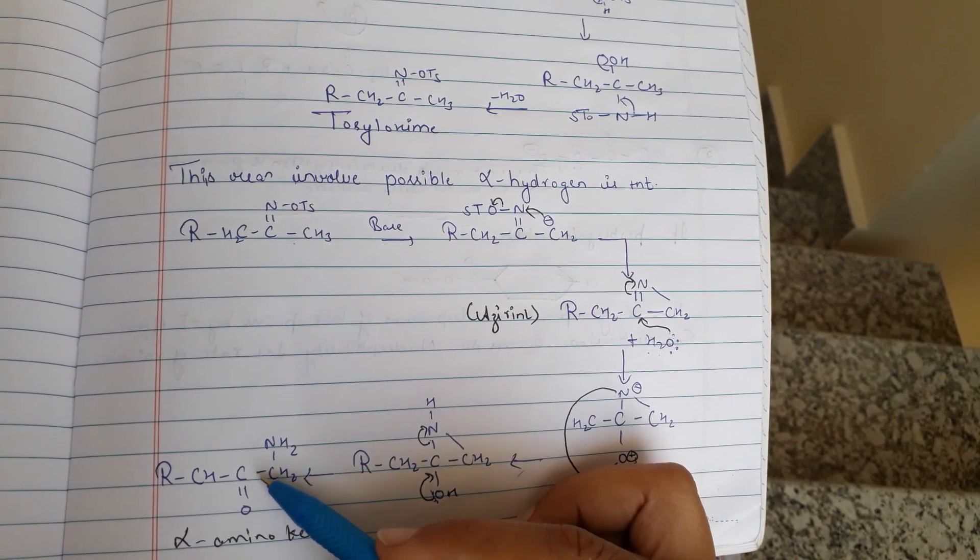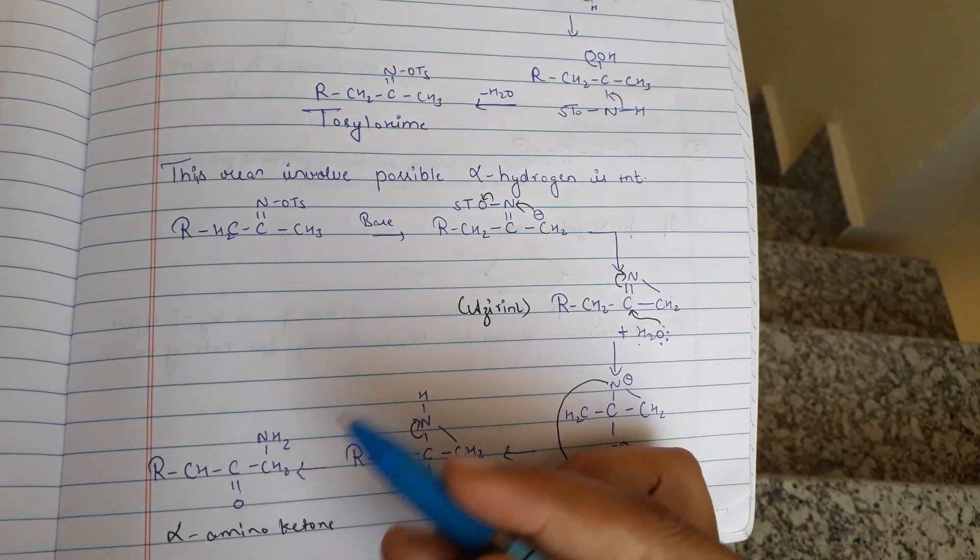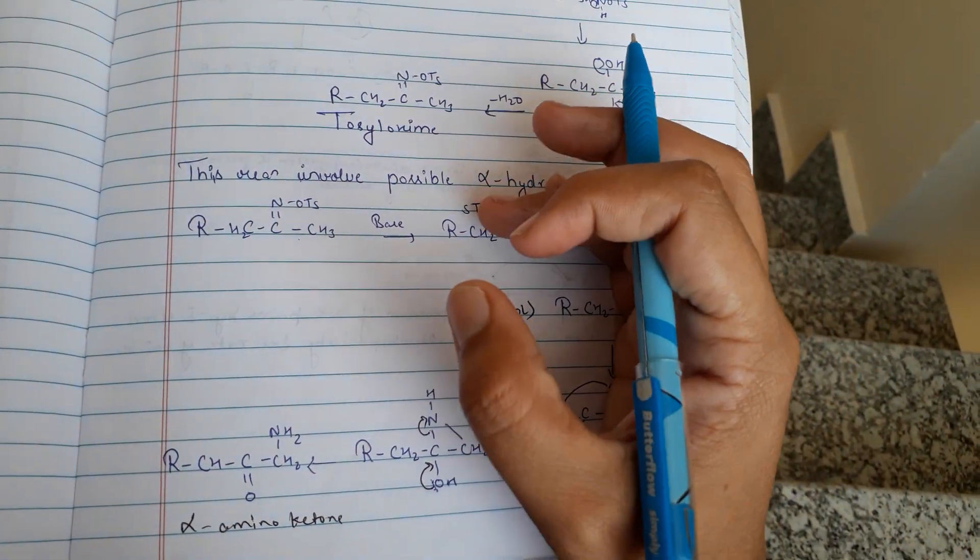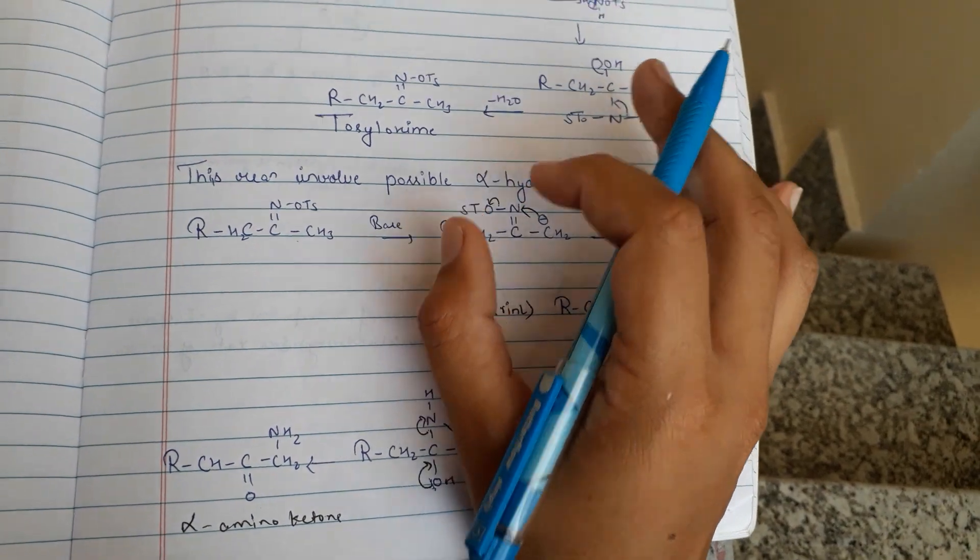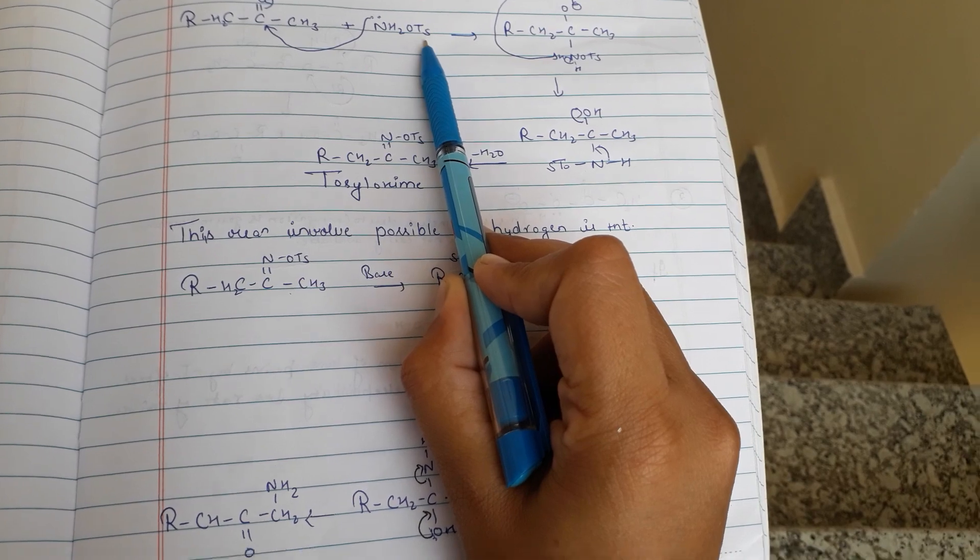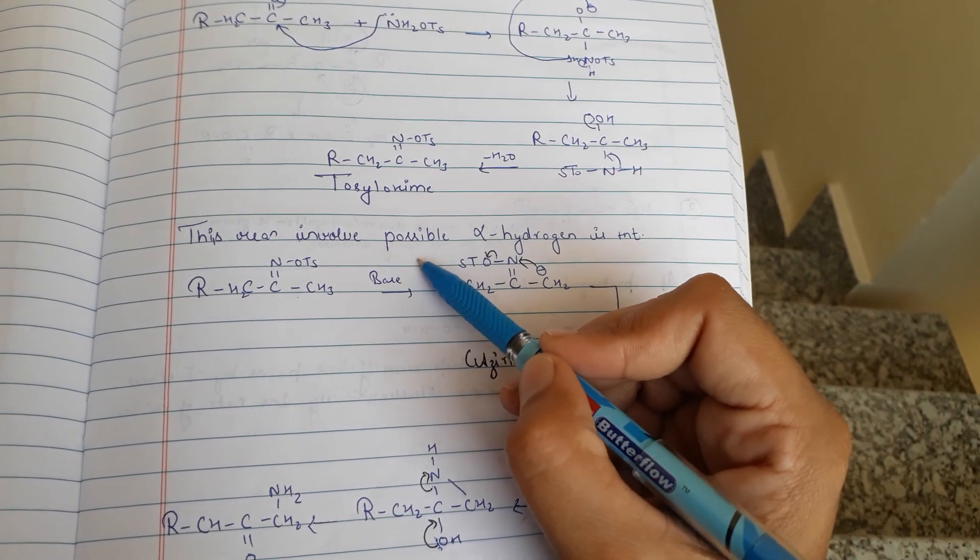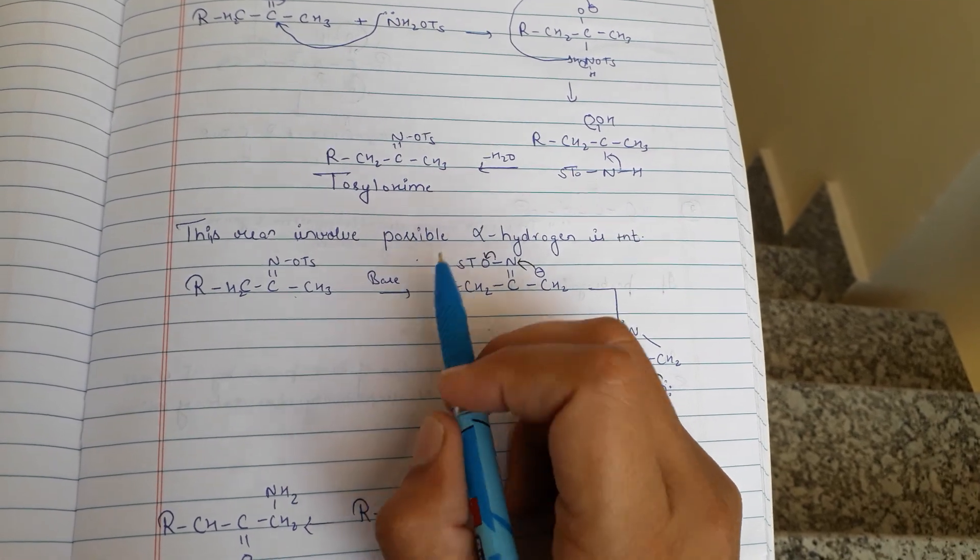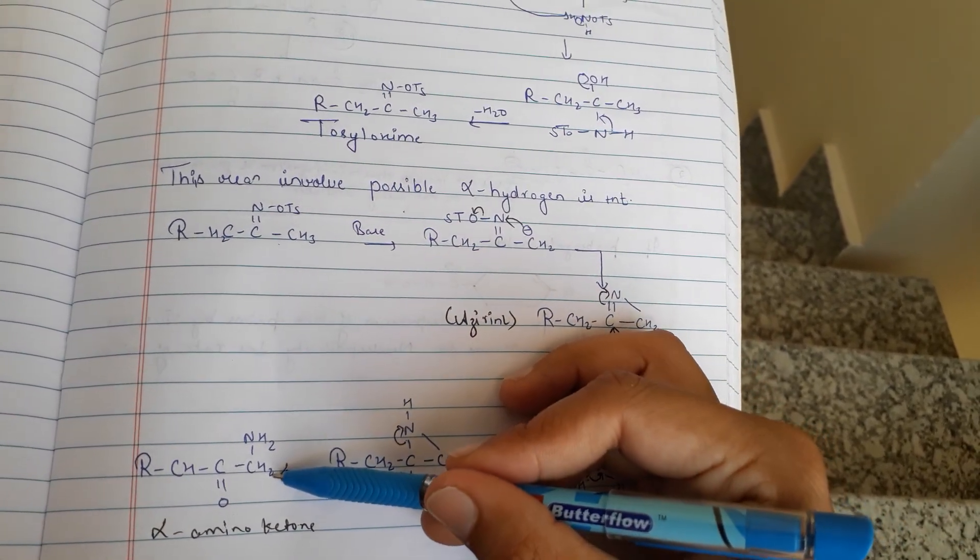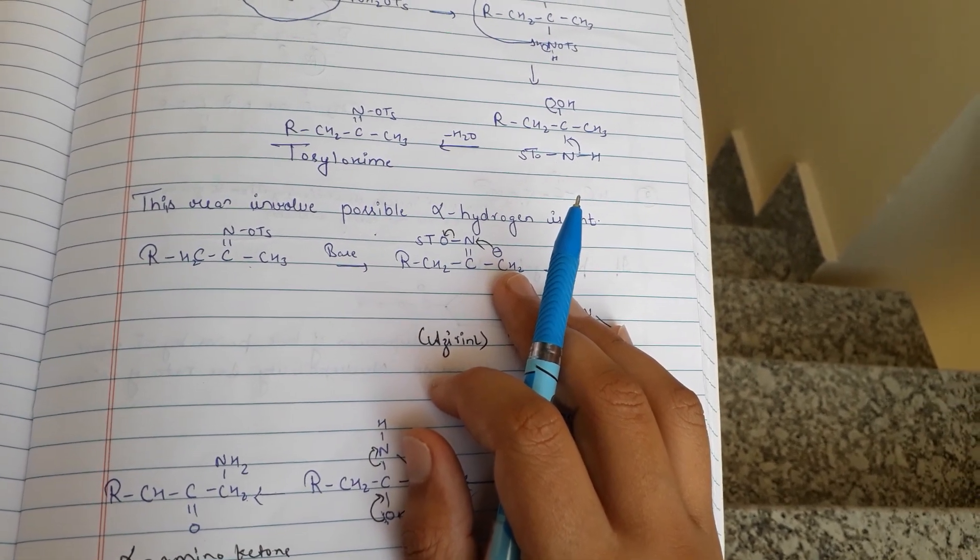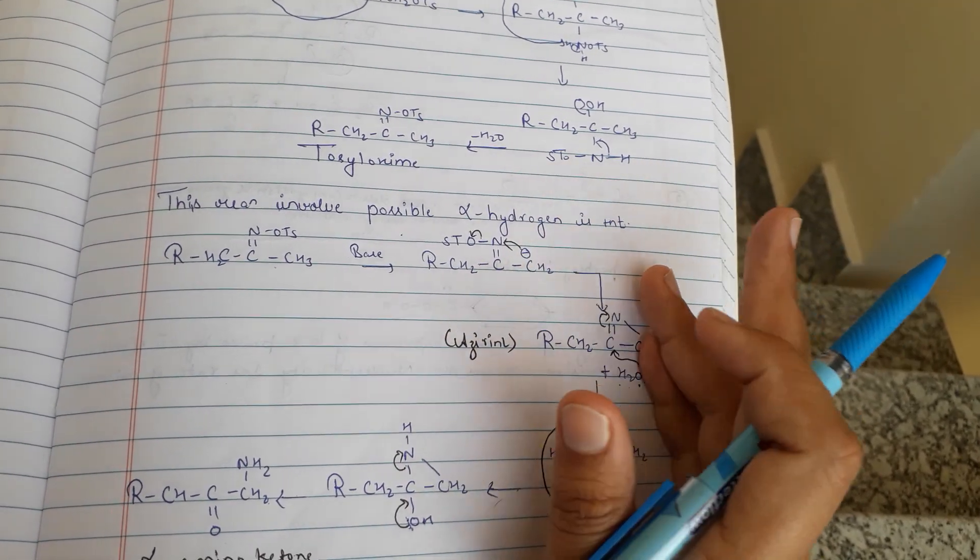So it is conversion of ketone to alpha amino ketone in presence of NH2OTs firstly, and after this with pyridine attached here, it will form alpha amino ketone. So this is the Neber rearrangement. Please like, share, and subscribe the channel for more videos.